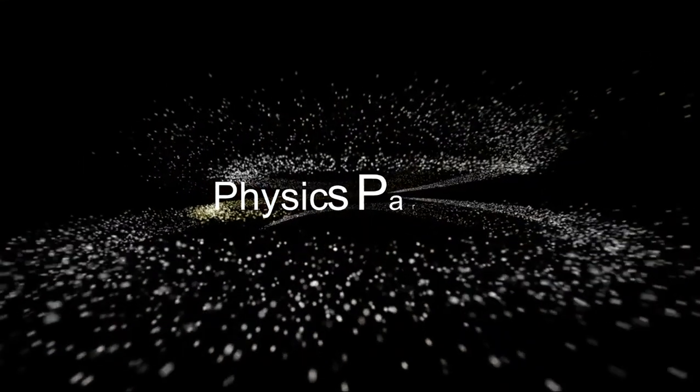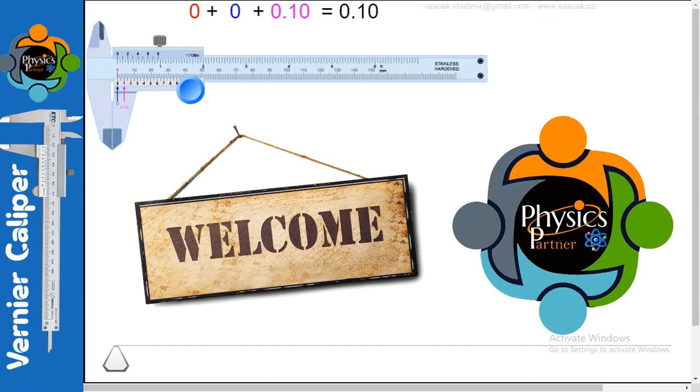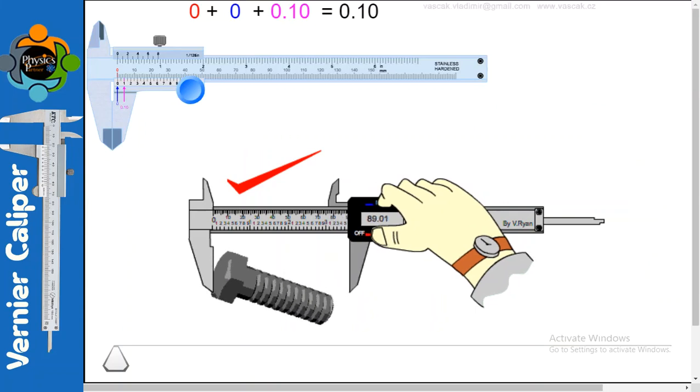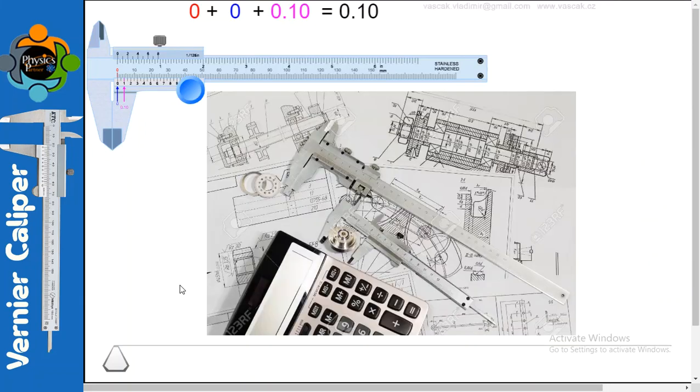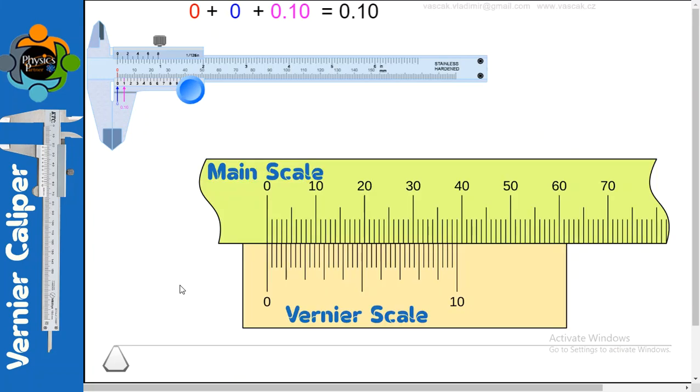Physics Partner, the YouTube channel for physics. Please subscribe my channel. Hello everyone and welcome back to another episode of Physics Partner. Today I brought some information about one measuring device known as Vernier caliper. It's actually an instrument for making very accurate linear measurements and it's been introduced by 1631. So it utilizes two graduated scales: the bigger one is a main scale and the smaller one is considered as auxiliary scale or it's also called vernier scale.